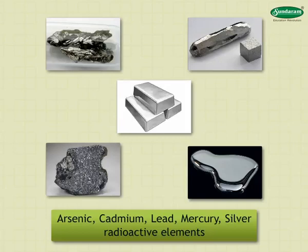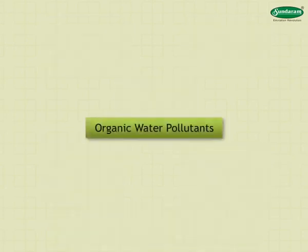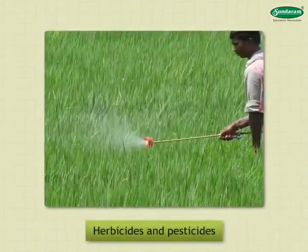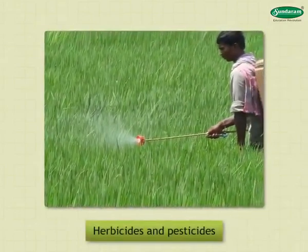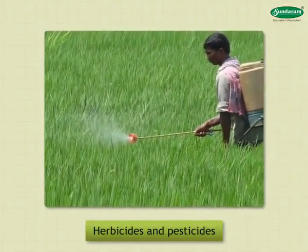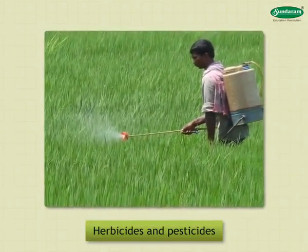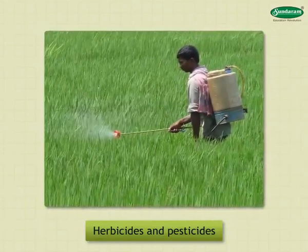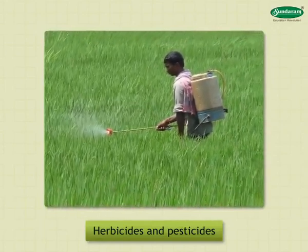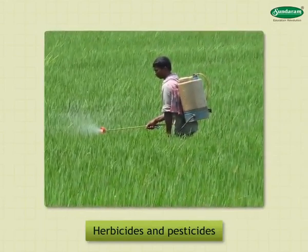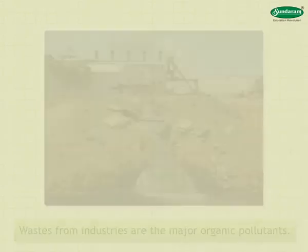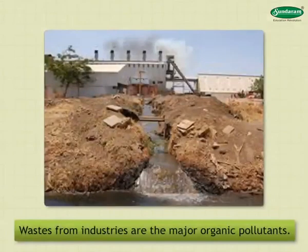Traces of radioactive elements are found in water bodies. Organic Water Pollutants: Use of herbicides and pesticides contributes to water contamination. When an excess of organic matter such as manure or sewage enters the water, organic pollution occurs. Wastes from industries are the major organic pollutants.